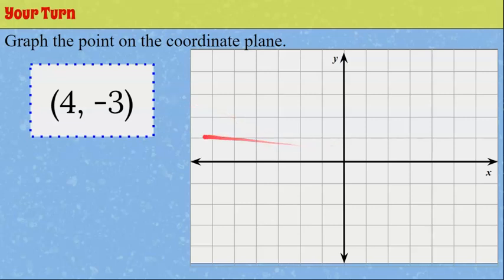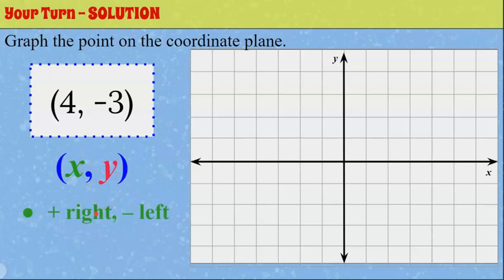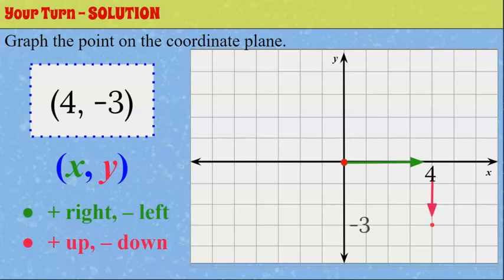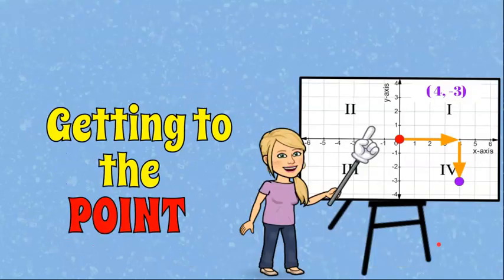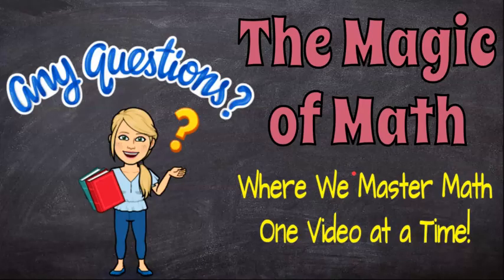Welcome back. We have x = 4, positive, so we go right four from the origin: one, two, three, four. Then y is negative three, so we go down: one, two, three — negative three on the y-axis. Plot our point. (4, -3) is in our fourth quadrant. And there you have it — reviewing the coordinate plane as we got to the point. Thank you for joining me at the Magic of Math, where we continue to master math one video at a time. Come back soon and have a great day!